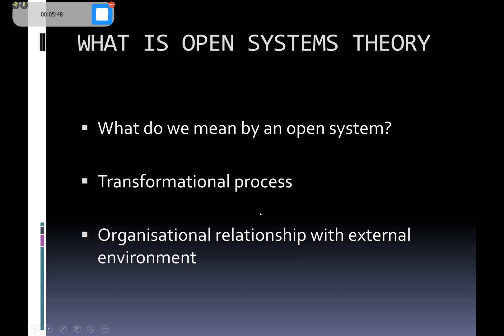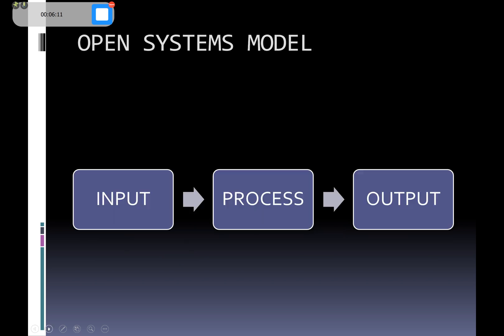Open systems theory has some key features. One of the key things is that you start off with what goes into the company, then it goes through what's called a transformational process. I'm now going to look at the slide so we can see that in a bit more detail. This is what the open system model looks like — you've got inputs, the process, and outputs.